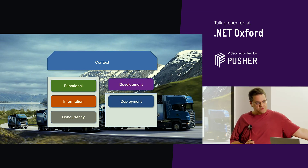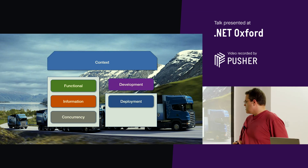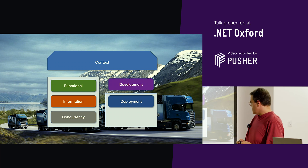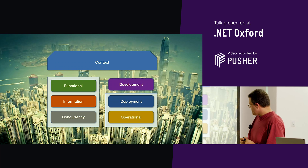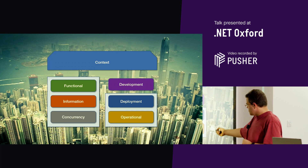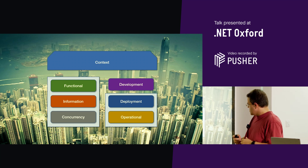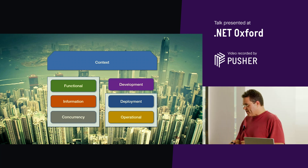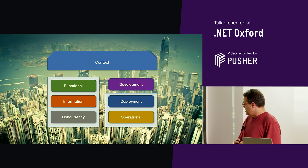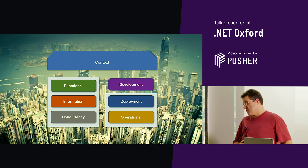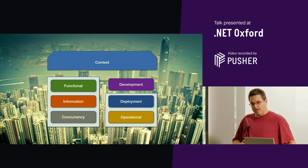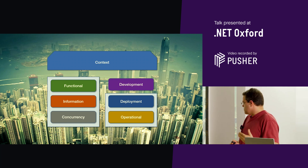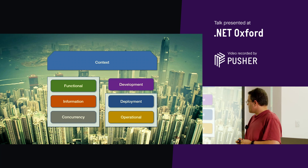Another view is deployment: how does your system get built and released, how does it get into its environment? And related to that, deployment and operational views together cover the production view of your system — how you manage the system once it hits live. The operational view covers things like how do we know the system's working, how do we log and monitor the system, and understand what it's doing for us.